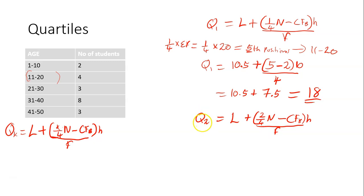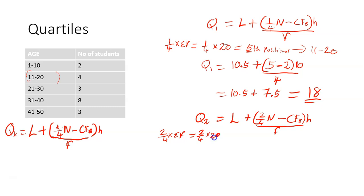To get the second quartile, you need to find the second quartile class first. To get the second quartile class, you say 2 over 4 times sigma F. That gives us 2 over 4 times 20, which is 10 — meaning the 10th position.